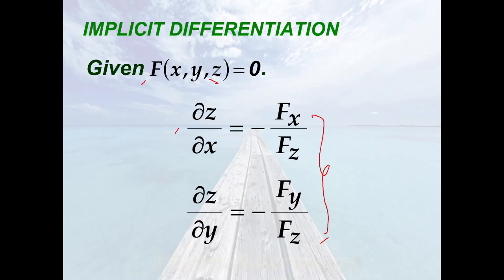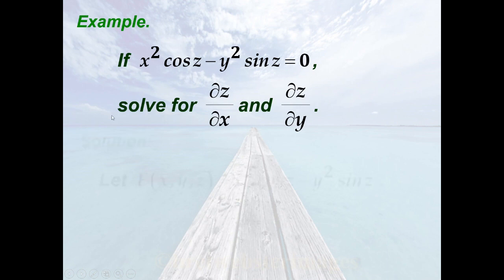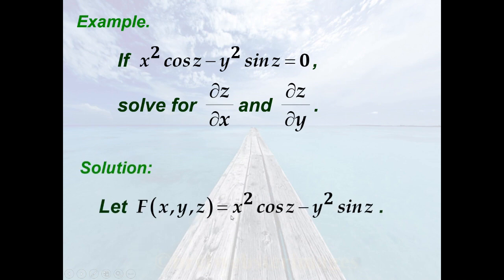To make this clear, let's see an example. Suppose that z is a function of both x and y, and x² cos(z) − y² sin(z) = 0. We are asked to find the partial of z with respect to x and the partial of z with respect to y. The equation is already in the desired form, so we let f(x, y, z) = x² cos(z) − y² sin(z).